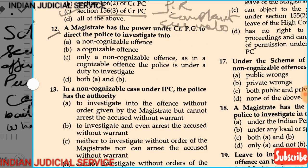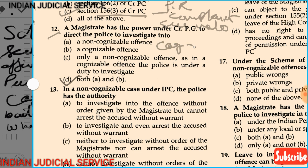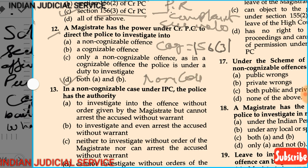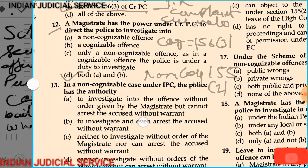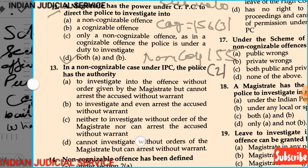Question 12: A magistrate has power under CrPC to direct the police officer to investigate into a non-cognizable offense, cognizable offense only, non-cognizable offense only, or both. Option D — both A and B — is correct. The magistrate has the power to instruct police to start investigation in a cognizable case under Section 156(3) and in a non-cognizable case under Section 155(2).